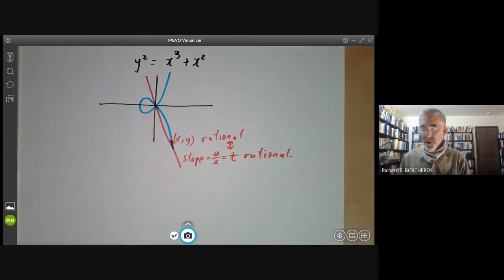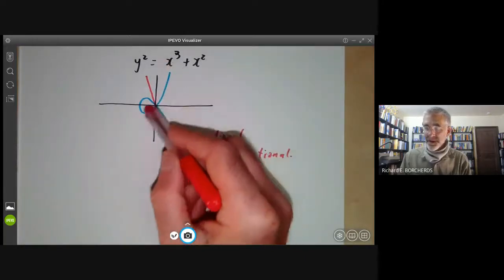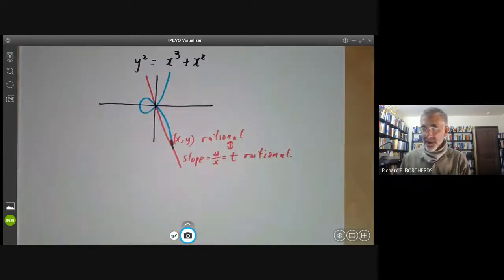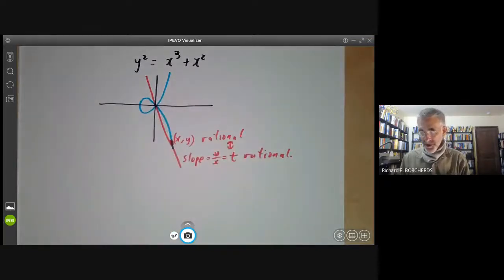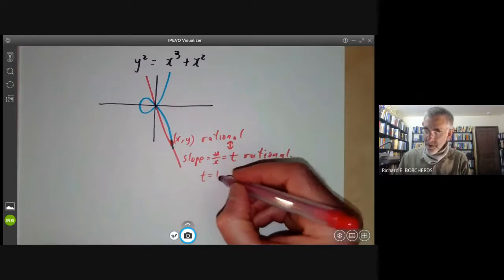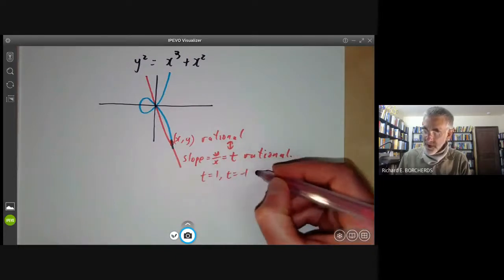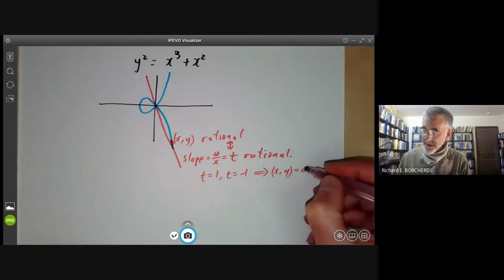So this means we almost get a one to one correspondence between points on this cubic and rational numbers. Well, we don't quite get a one to one correspondence because you notice that something funny is going on at the origin. In fact, t equals one, t equals minus one, both correspond to the point x, y equals zero, zero.